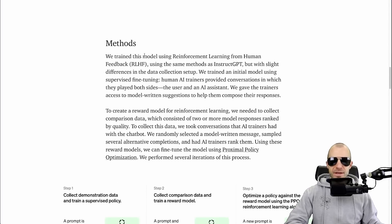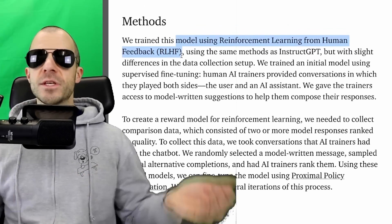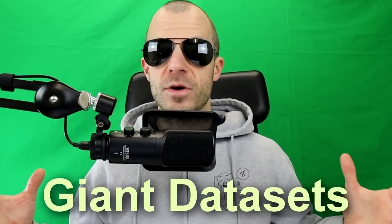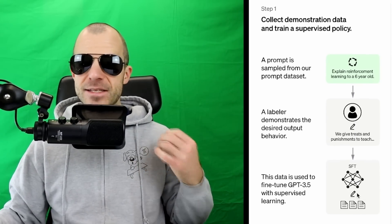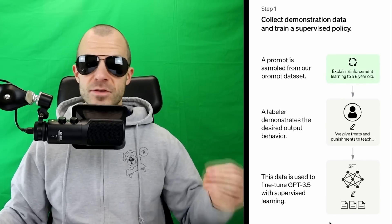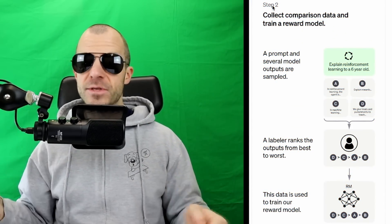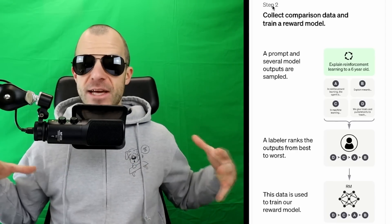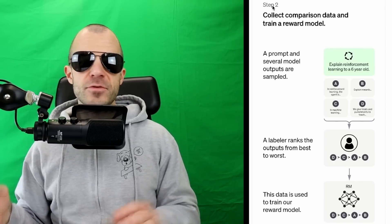In the methods section, it says they trained this model using reinforcement learning from human feedback - a technique OpenAI and others have previously described. This isn't super easy though, because you need giant datasets and reinforcement learning isn't the most stable training paradigm. The current approach goes something like this: Step one, they collect demonstration data from humans and train a supervised policy. Step two, they let this model produce a lot of output and a human ranks it - this is good, this is better, this is really bad. That data is used not to train the model itself, but to train a reward model, because it's much more scalable to let humans consume and rate data than produce it.